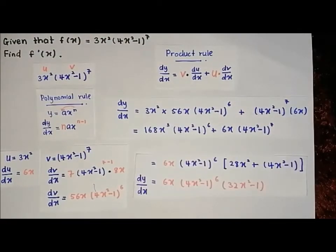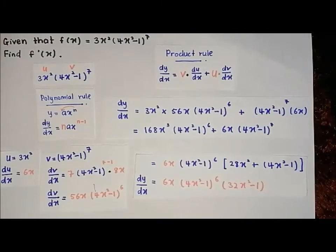To solve the equation, we need to factorize. Our final answer for dy over dx is 6x times (4x squared minus 1) to the power of 6, times (32x squared minus 1).